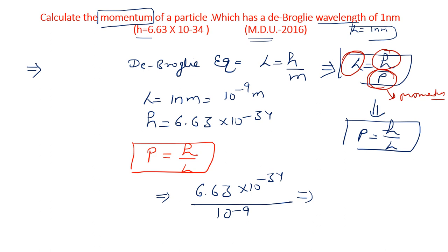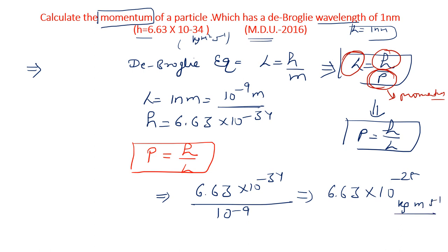Putting in the values: P = 6.63 × 10⁻³⁴ divided by 10⁻⁹ meter. Solving this gives P = 6.63 × 10⁻²⁵. The unit of H is kg·m²·s⁻¹ and lambda is in meters, so momentum comes out in kg·m·s⁻¹. The answer is P = 6.63 × 10⁻²⁵ kg·m·s⁻¹. We simply had to put values into the de Broglie equation.